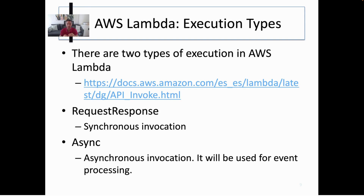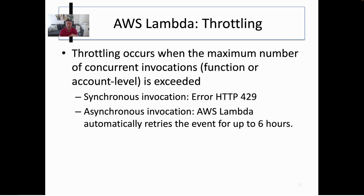There are two execution types. You have request-response, which is a synchronous invocation of a Lambda function. You can also have asynchronous invocation, which is used for event processing. If you exceed the maximum number of concurrent invocations during synchronous processing, this returns an HTTP error code. But with asynchronous invocations, Lambda automatically retries the event for up to six hours. That means if you upload a million images into an Amazon S3 bucket connected to a Lambda function, Lambda will process all events at 3,000 concurrent invocations and automatically handle the rest — eventually all one million images will be processed without you needing to monitor, babysit the execution, or retry for errors.